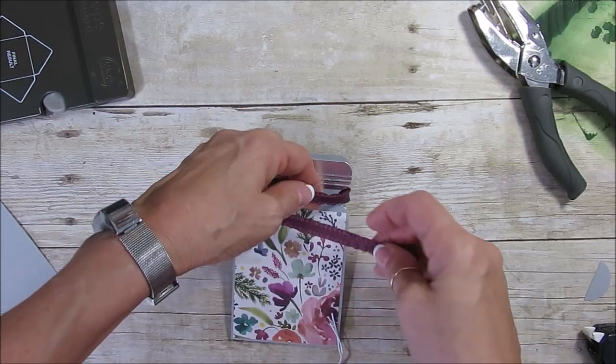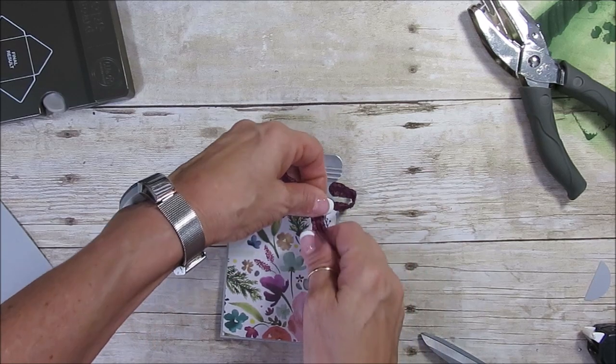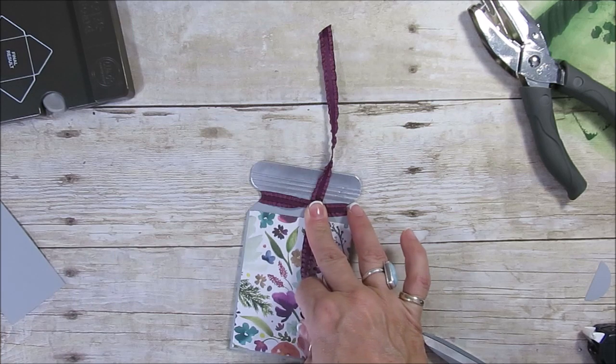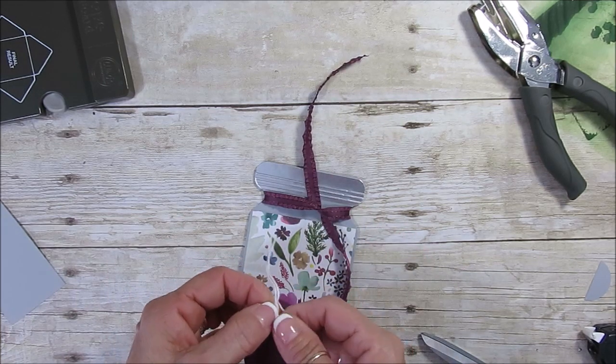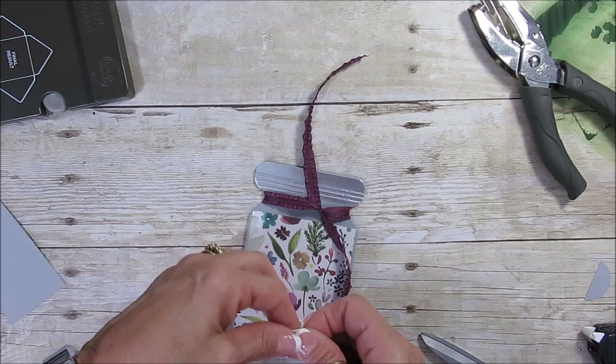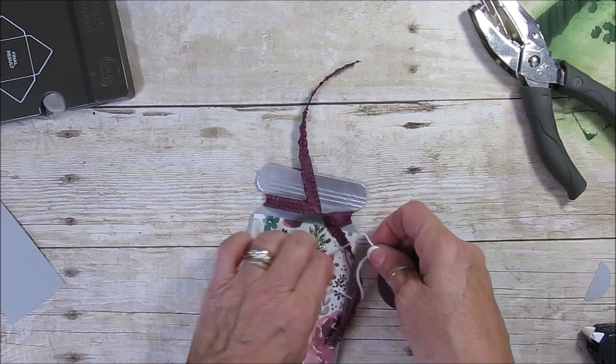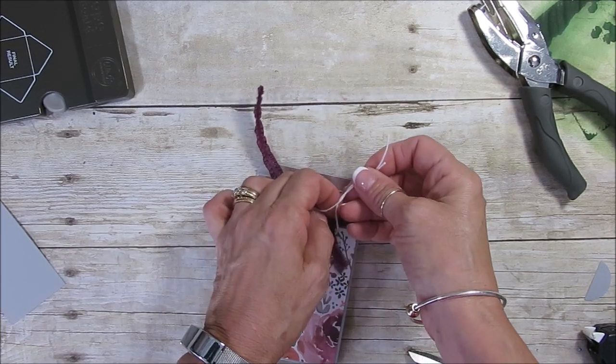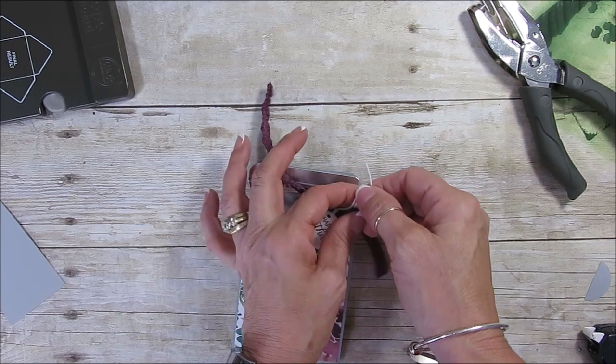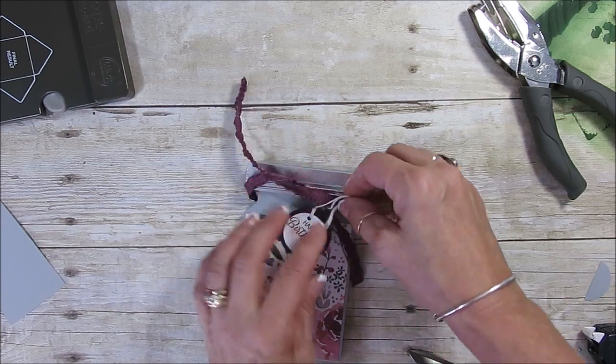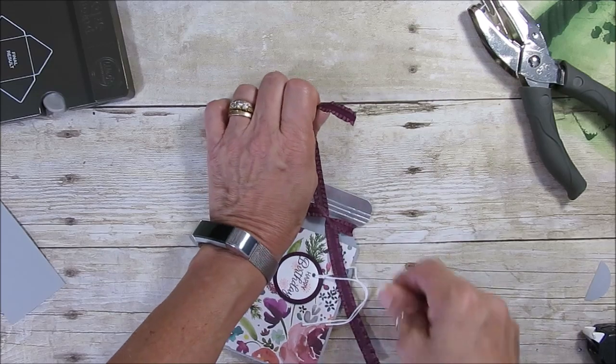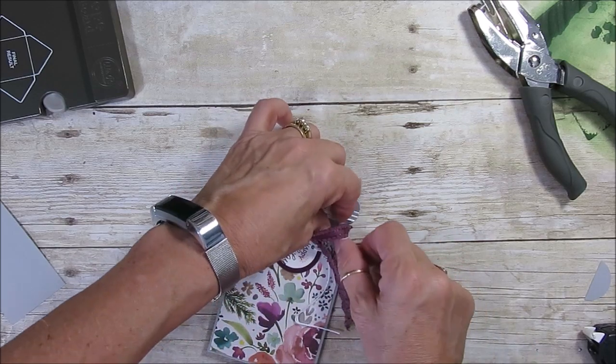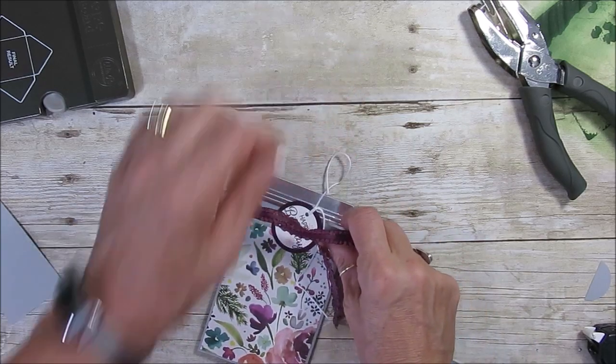Now you're going to tie this up. Twist. I'm going to decide about how much you want to. Here we go. Just do a little knot here. We're going to do a bow. Leave it like that.